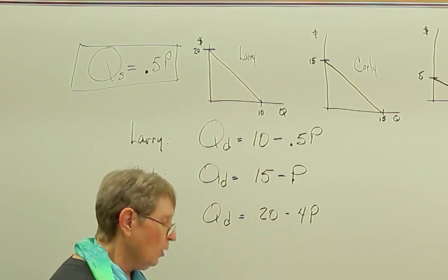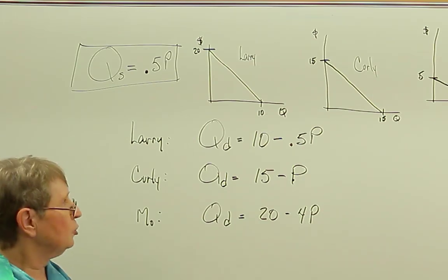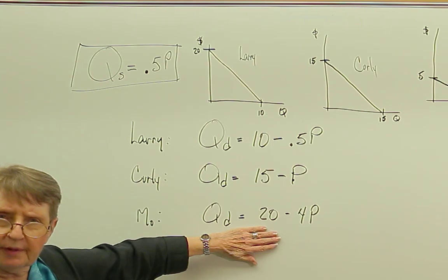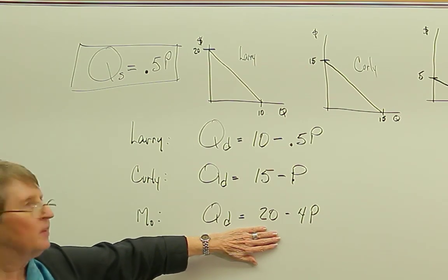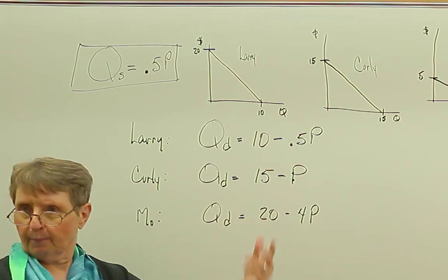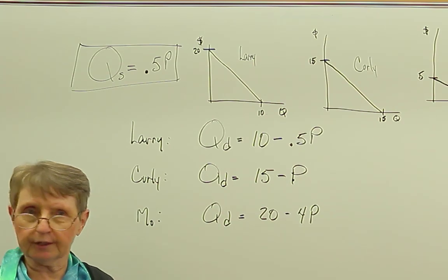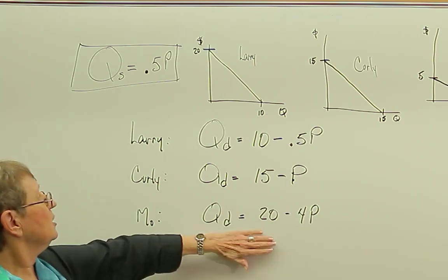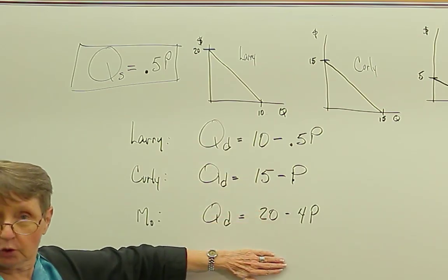Now, we can do two things with these demand curves. We could say, well, what if this weren't a public good? What if instead of this being the demand for streetlights, this were the demand for apples or some private good?